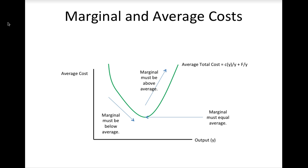By applying this logic, we can determine the location of the marginal cost curve. When the average total cost curve is declining, marginal cost must be below it. When the average cost curve is increasing, the marginal cost curve will be above it. The marginal cost curve must cross the average cost curve at its minimum value. Thus, the marginal cost curve will generally have a U-shape, below ATC when ATC is declining, above ATC when ATC is increasing, and intersecting ATC at its minimum point.